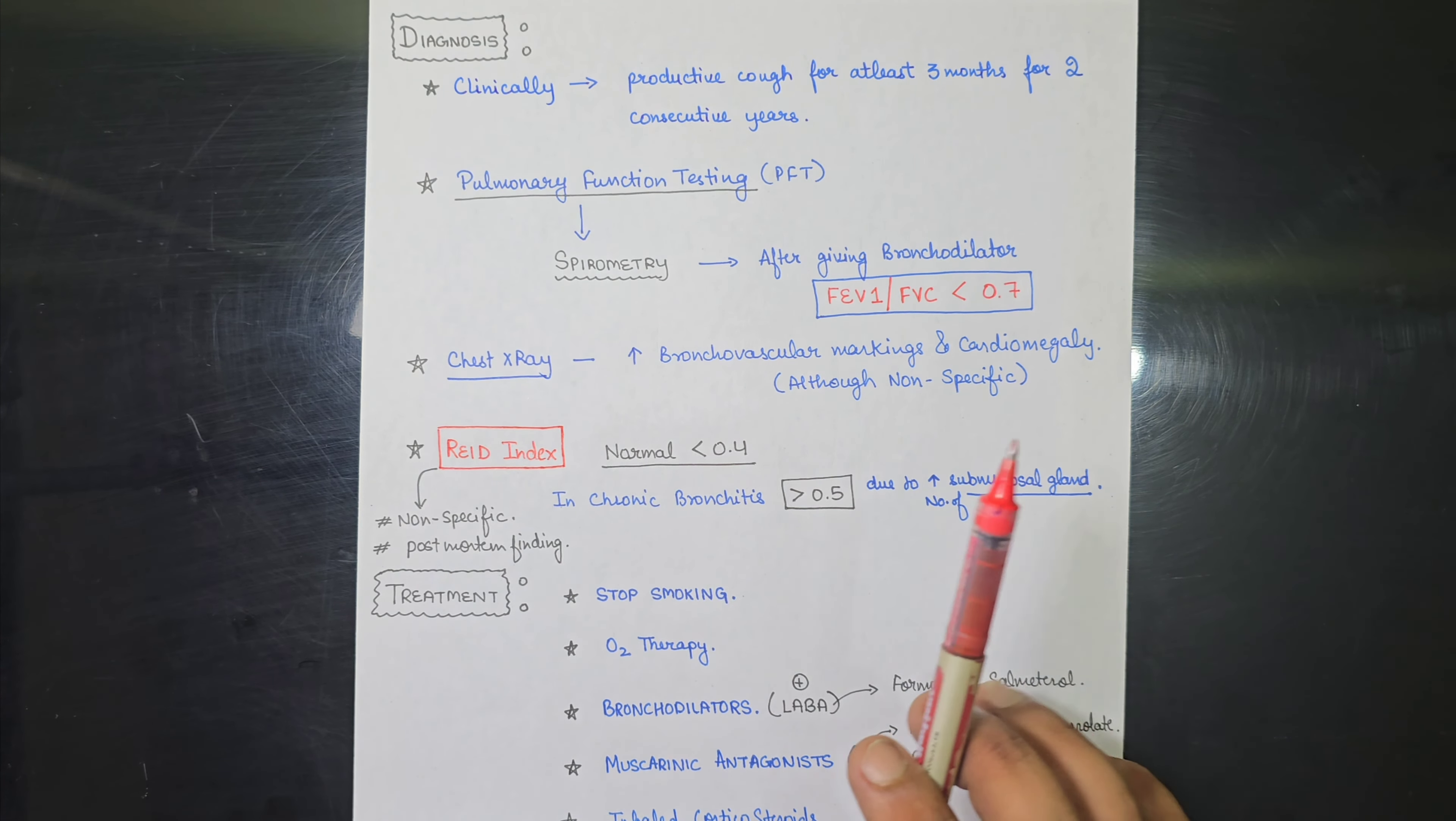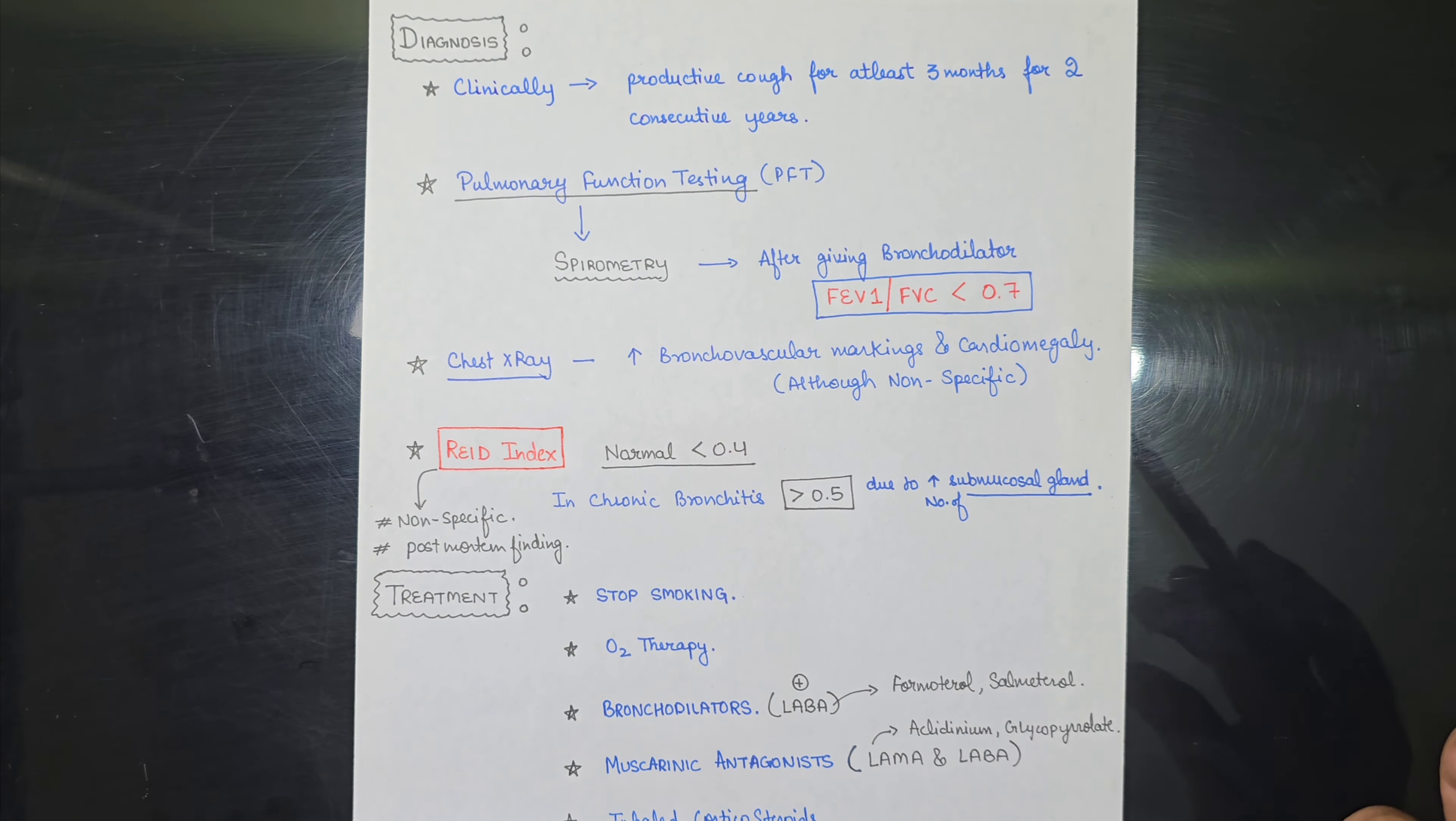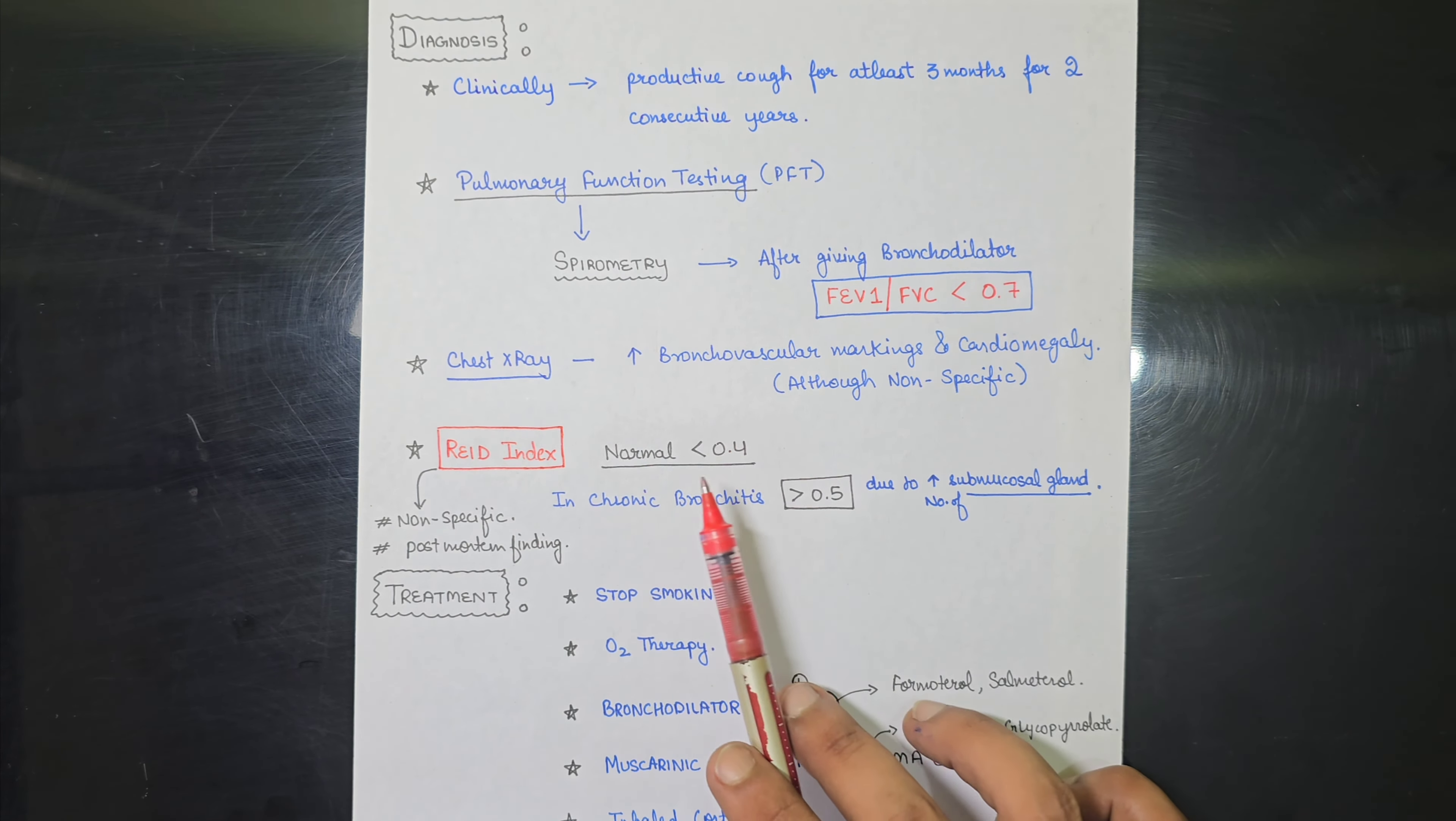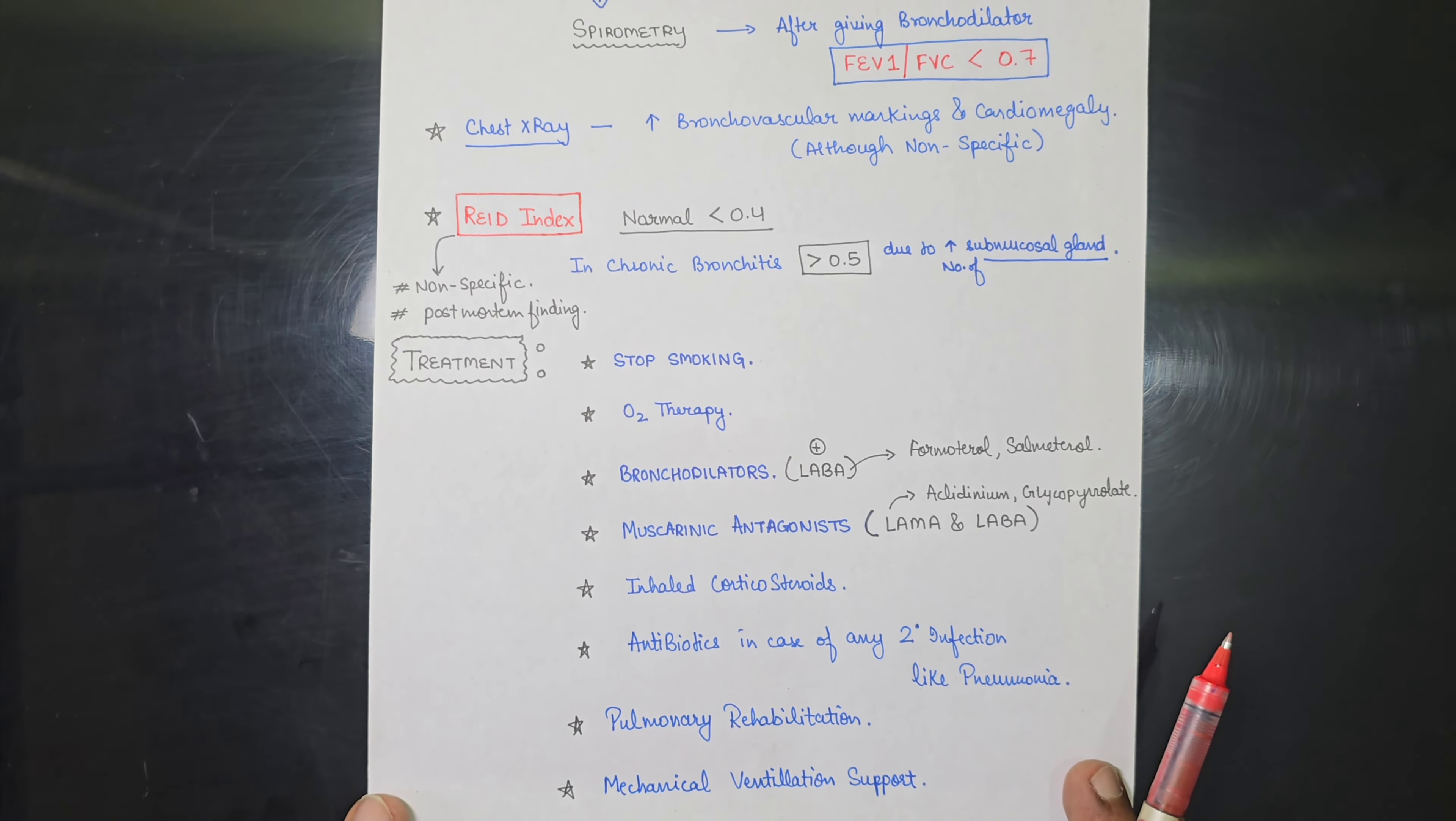So it is not a diagnostic criteria, but the patient who dies due to chronic bronchitis or after the post-mortem, we can see what happens in the chronic bronchitis. In Reid index, normally Reid index is less than 0.4. Like in chronic bronchitis, it is more than 0.5. It is due to the increased submucosal gland. The number of submucosal glands, when they tend to increase, the Reid index will increase.